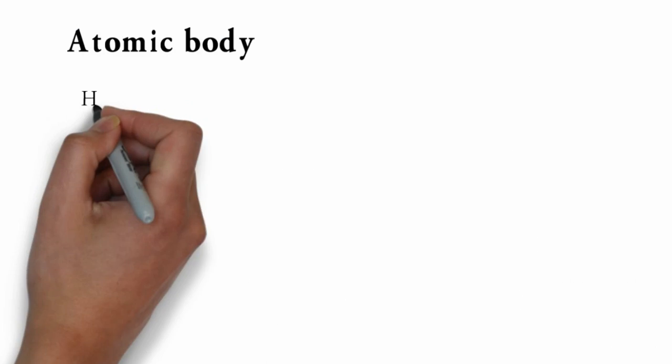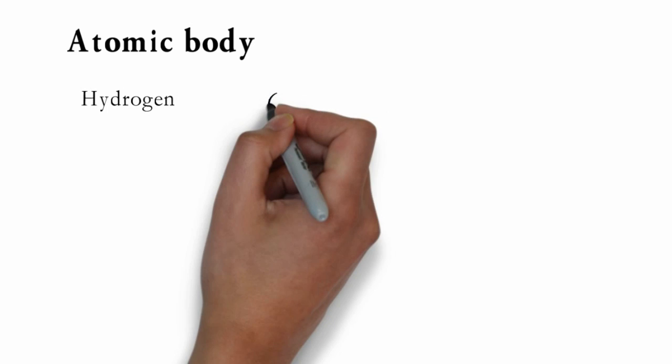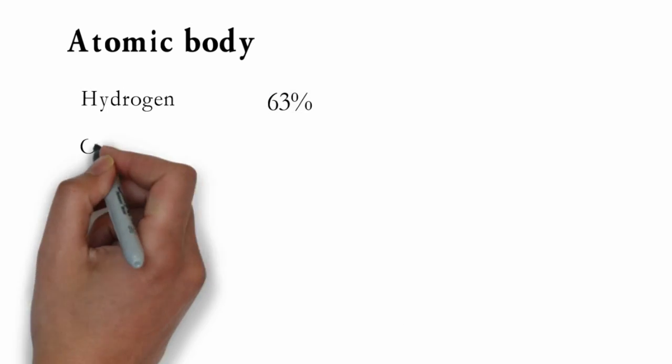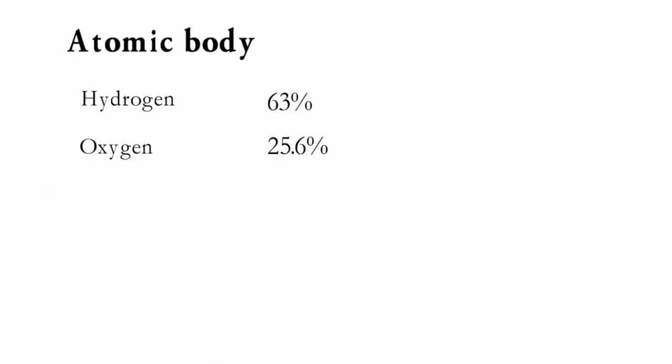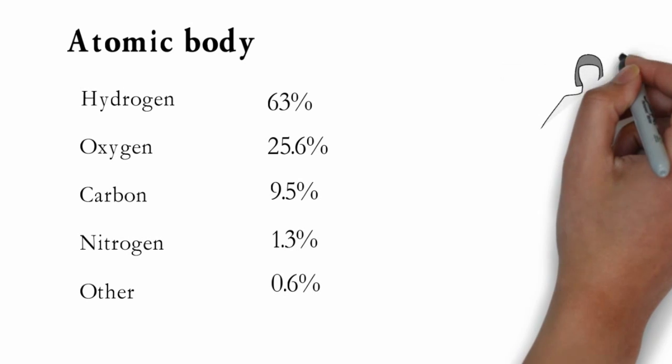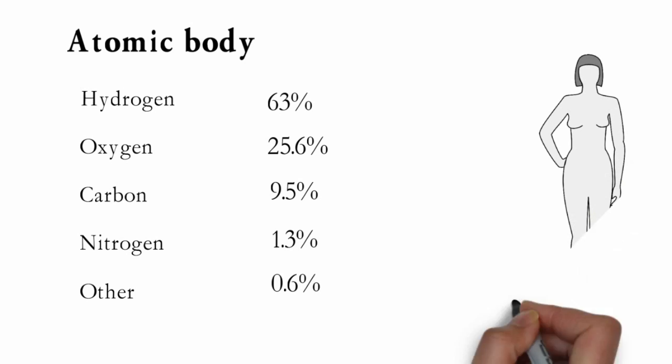The top 5 elements making this astronomical atomic count are hydrogen, which has about 63% share, oxygen is about 25.6%, carbon has about 9.5% share, nitrogen is about 1.3%, and other elements including calcium, phosphorus, potassium, sulfur, chlorine, sodium, magnesium, iron, copper, zinc, and some others makes the remaining 0.6% of atoms in human body.